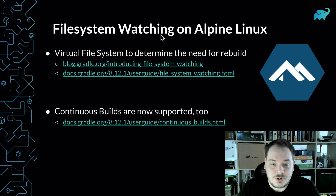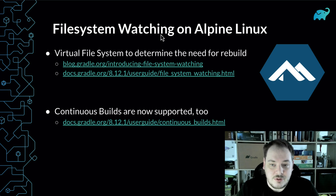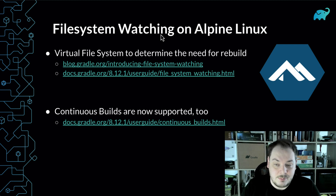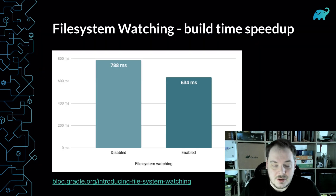Continuous builds watch for changes and build and test the project on the fly. It's quite handy especially if you operate in cloud-native developer environments like inside containers, where Alpine Linux is quite popular. So now you can have live rebuild just in this configuration.